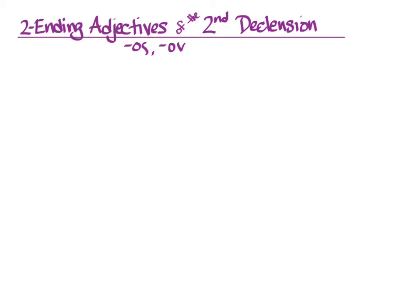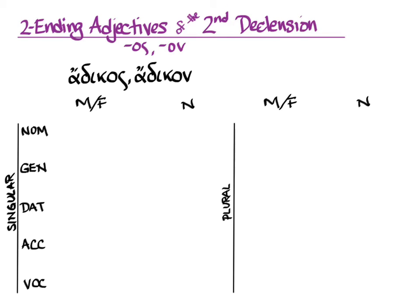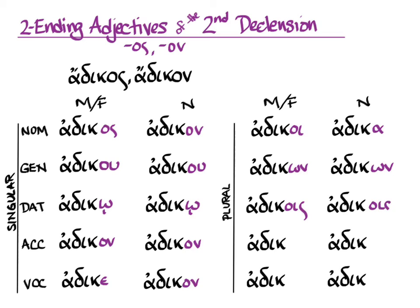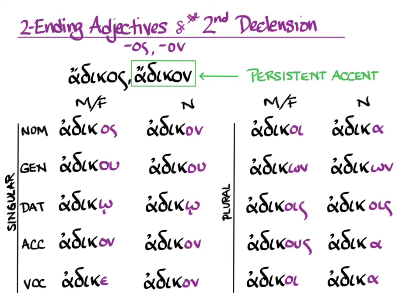Let's try it with a real adjective. Adikos, adikon means unjust. It is a compound: a- for the 'un' part and the dikos root that means just. So it's a two-ending adjective. Here we have our chart, and we get our stems by taking off that os/on. We put in all second declension endings, and we'll use the masculine-looking ones for both masculine and feminine uses. Persistent accent is based on the neuter nominative singular — adikon wants an acute on that third-to-last syllable, but in practice the endings' changing quantity will sometimes cause that acute to move around.